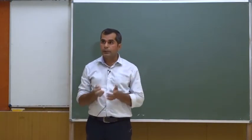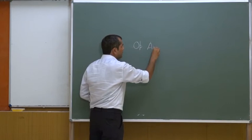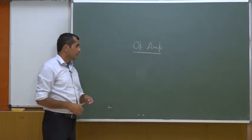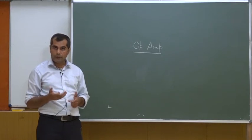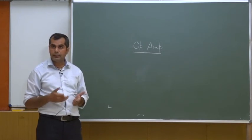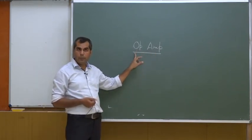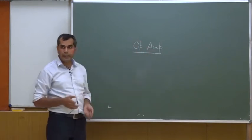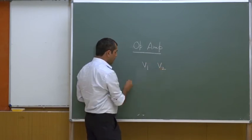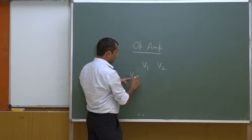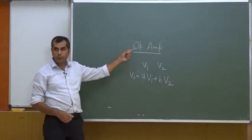One more thing: the name 'operational amplifier' comes from the fact that we can perform many mathematical functions — logarithm of a voltage signal, anti-logarithm, integration, differentiation, and many other mathematical operations. For example, if you want to design a weighted summer with two inputs V1 and V2, you want V_out equal to A times V1 plus B times V2. This weighted sum can be implemented using an operational amplifier.